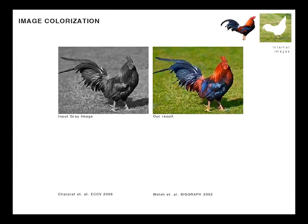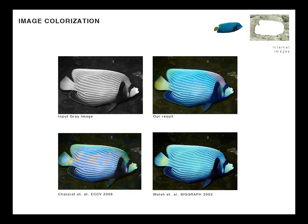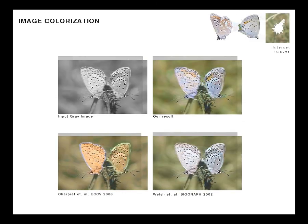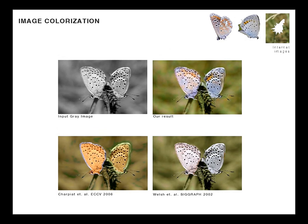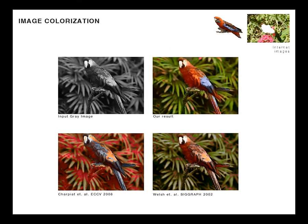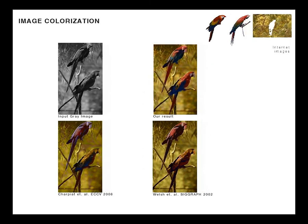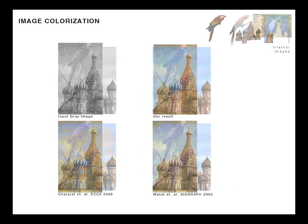Here we show our results for several grayscale examples and compare them to two state-of-the-art colorization techniques. The same internet reference images obtained by our filtering method are used for all three algorithms, and the best results among the different parameter settings are shown for the comparison methods. Our results compare favorably to those of the other techniques on this wide array of images.